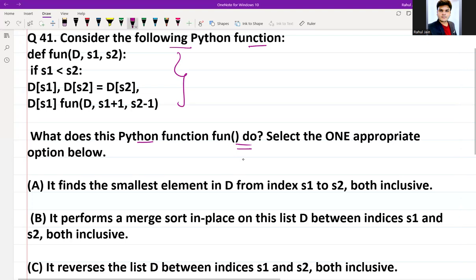If you look at the Python code here, we are defining a function and this function is checking if s1 is less than s2. If s1 is less than s2 and the condition is true, then we are swapping. What we are doing is swapping: D[s1], D[s2] = D[s2], D[s1].